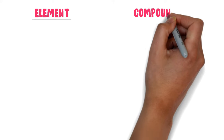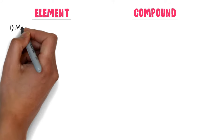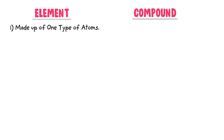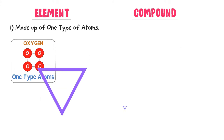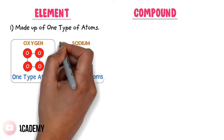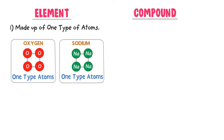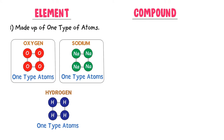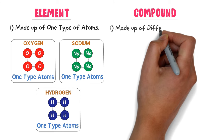Elements are made up of one type of atoms. For example, consider oxygen — oxygen is made from one type of atoms, so it is an element. Secondly, consider sodium — it is made from one type of atoms, so it is also an element. Thirdly, consider hydrogen — it is also made from one type of atoms, so it is an element.